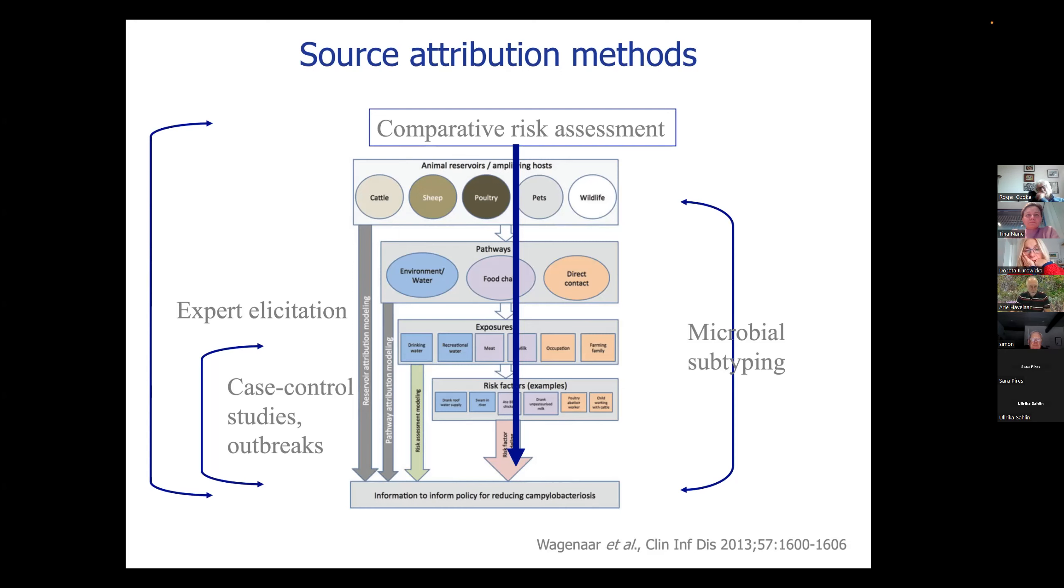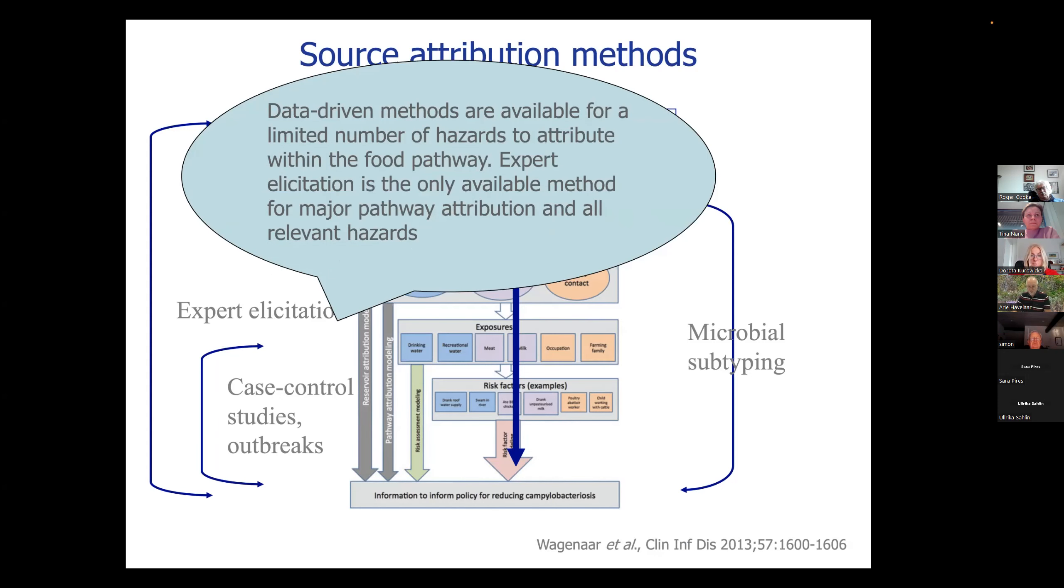And there are data around from all of these scattered domains, but there are no algorithms that we can use to really combine all this data in an analytical approach. So this is where the power of the human mind, as I like to call it, comes to help. And we call upon that using expert elicitation studies that basically are able to embrace all the data from all these different domains, different types of data sources, and try to get the best estimate using that information. So another conclusion from Sarah's paper, data-driven methods are available for a limited number of hazards to attribute within the food pathway. I don't know, this is not from Sarah's, this is my own conclusion. So you can do something for Salmonella, for Campylobacter, once you've attributed it to food.